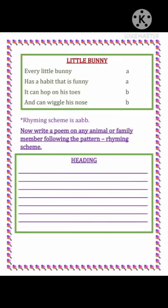Now let's write the poem based on the given graphic organizer. The title of the poem is 'Little Bunny.' Every little bunny has a habit that is funny. It can hop on his toes and can wiggle his nose. So it is following the rhyming scheme A, A, B, B. Now you can write a poem on any animal or family member following the rhyming scheme pattern.